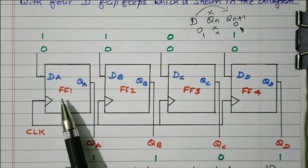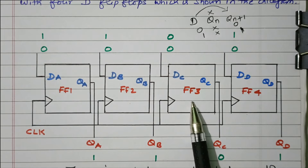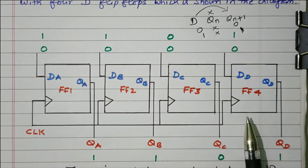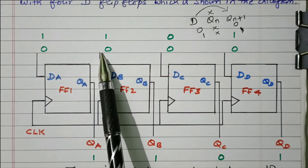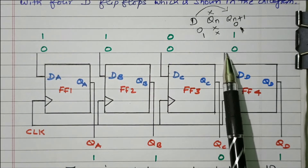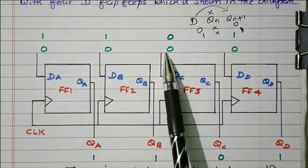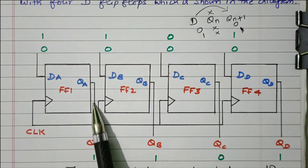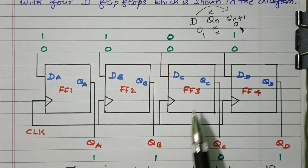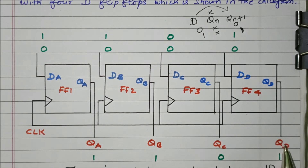Here, four flip-flops are available — flip-flop 1, 2, 3, and 4. The data is given parallelly to all four flip-flops. Similarly, the output is also taken in parallel: QA, QB, QC, and QD are the four parallel outputs.